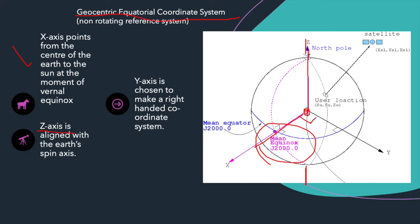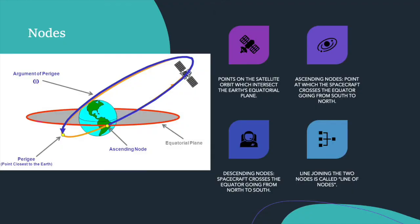The y-axis is chosen to make a right-handed coordinate system. The x and y-axes lie in the equatorial plane at right angles, and the z-axis is the spin axis of the Earth. Above this coordinate system, we define other parameters to locate a satellite in its orbit. From the picture, you can see the red color line is the equatorial plane where the x-axis and y-axis come from the center of the Earth, and the z-axis is the spin axis of the globe.